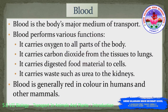The blood is the body's major medium of transport. Blood performs various functions: it carries oxygen to all parts of the body, it carries carbon dioxide from all the tissues of the body and brings it to the lungs, it carries digested food material to the cells, and it carries waste such as urea to the kidneys. Blood is generally red in color in humans, other mammals, and vertebrates. However, the blood of some animals is blue, green, or colorless.